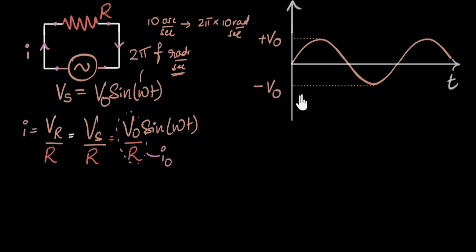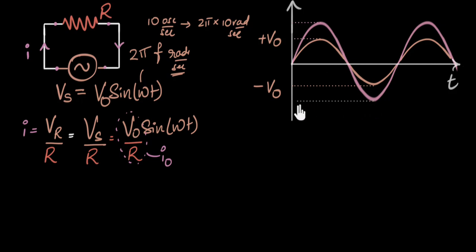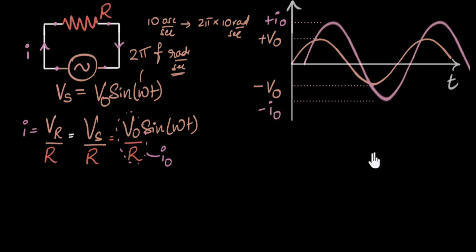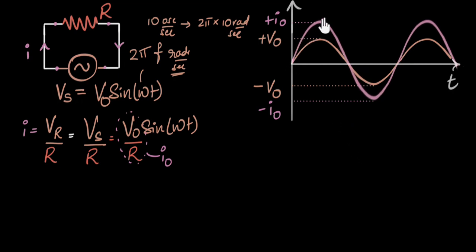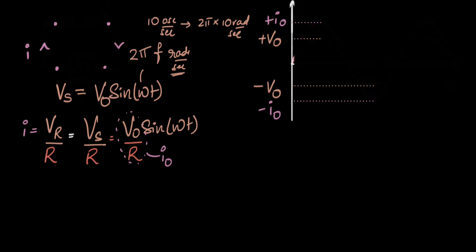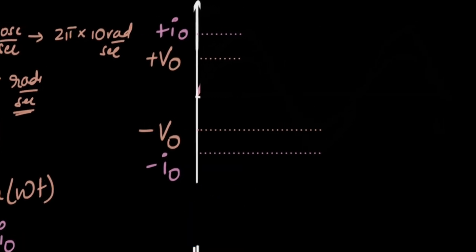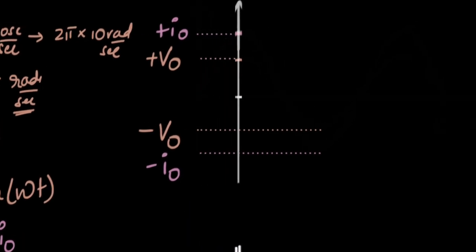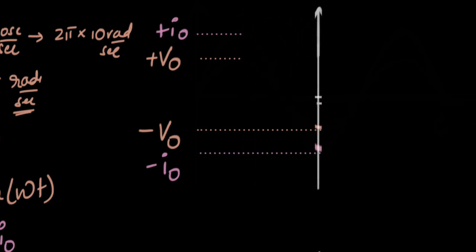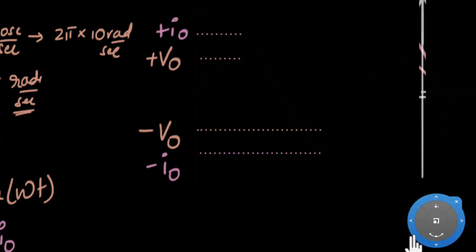It would be a great idea to pause the video and try drawing the current graph on top of the voltage graph yourself. Here is what it looks like: the peak value represents positive I naught and the trough represents negative I naught. Notice the graph is not shifted — it aligns exactly because they are in sync. They go to zero together, maximum together, zero together, minimum together, and so on. If you move the time axis forward, you can clearly see both oscillating together, both going up together, both reaching negative maximum together.